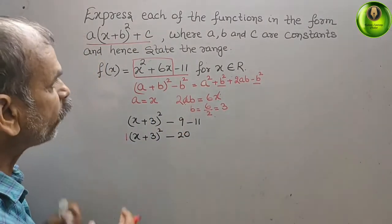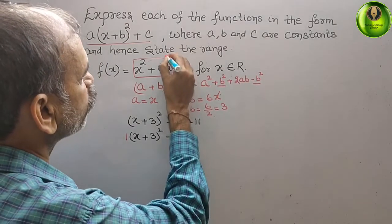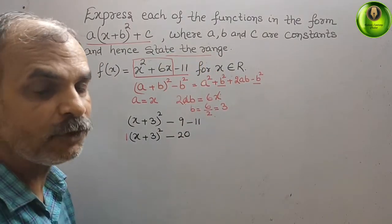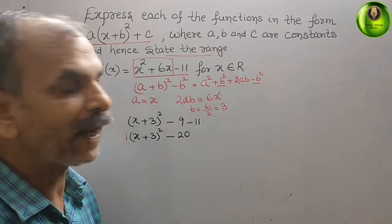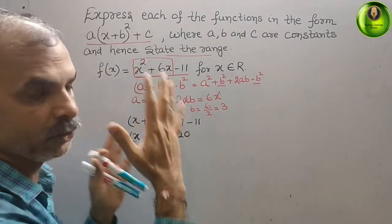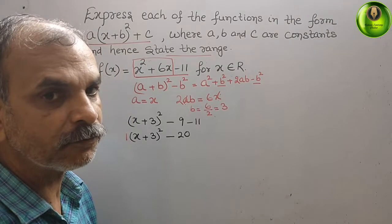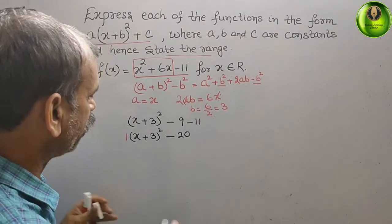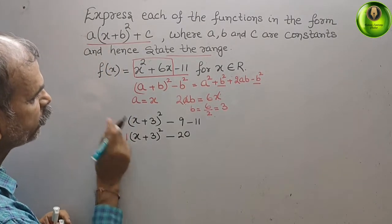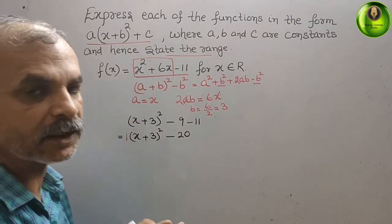Next, we have to find the range. To solve this, instead of f(x) we will take y, so y = (x + 3)² - 20.